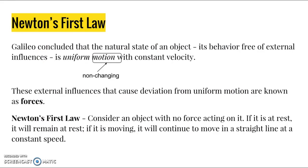He ended up concluding that the natural state of an object, its behavior free of external influences, is going to be uniform motion with constant velocity. Uniform means non-changing. These external influences that cause a deviation from uniform motion are what are known as forces. Forces cause the object to be in non-uniform motion.